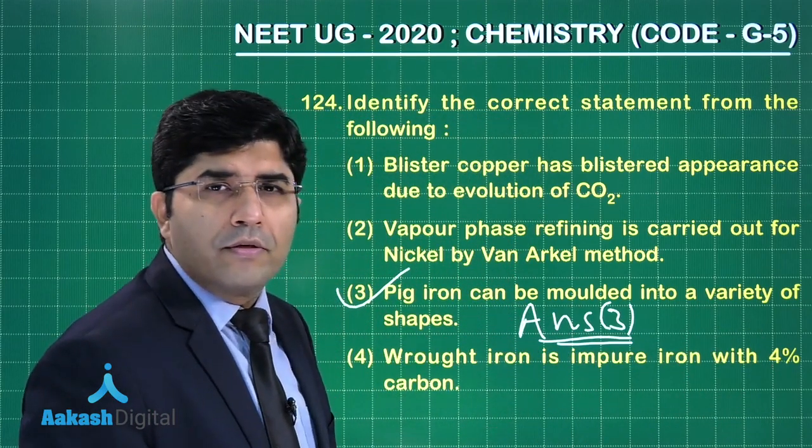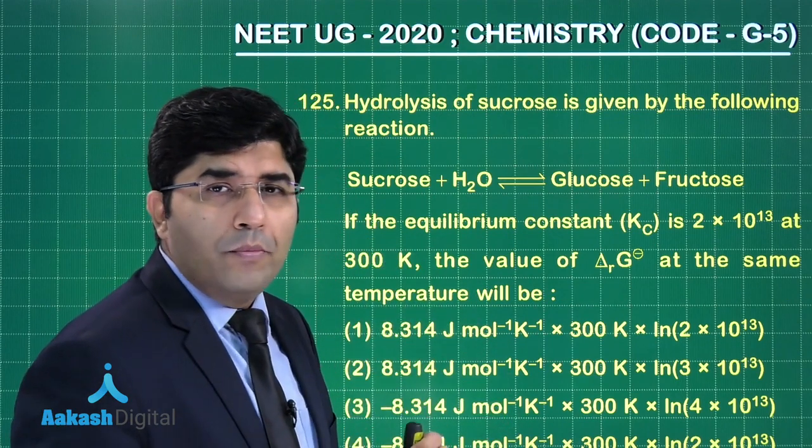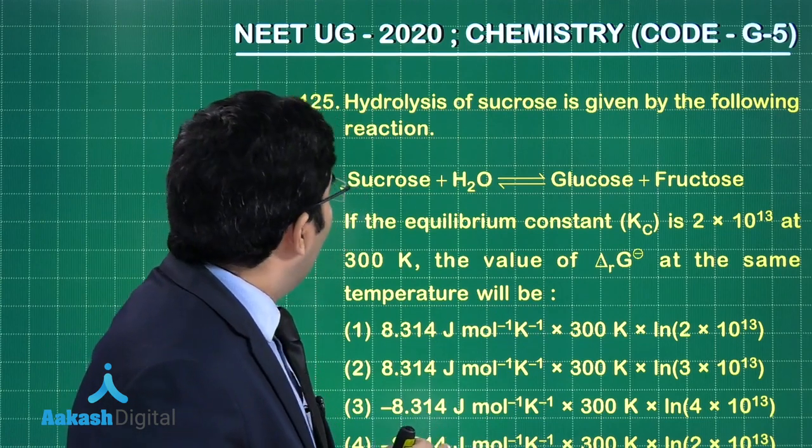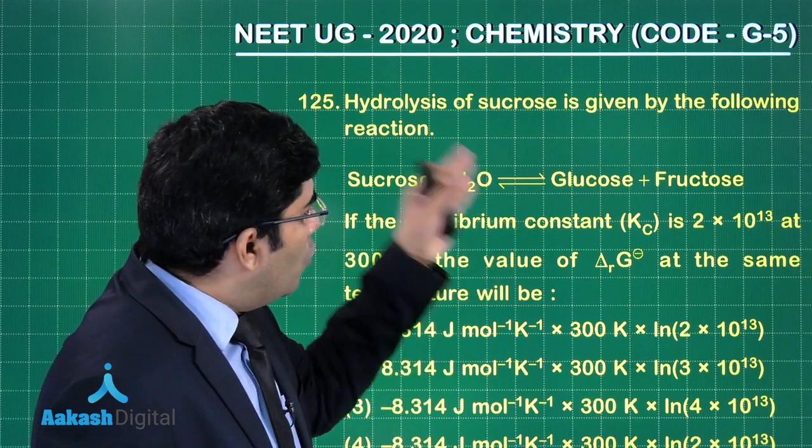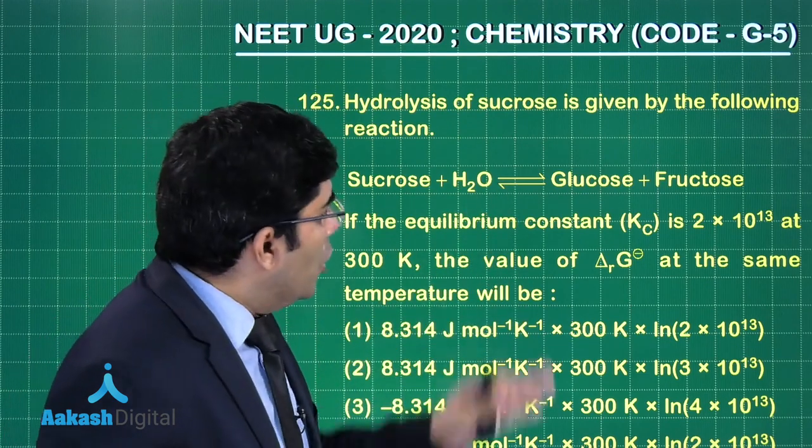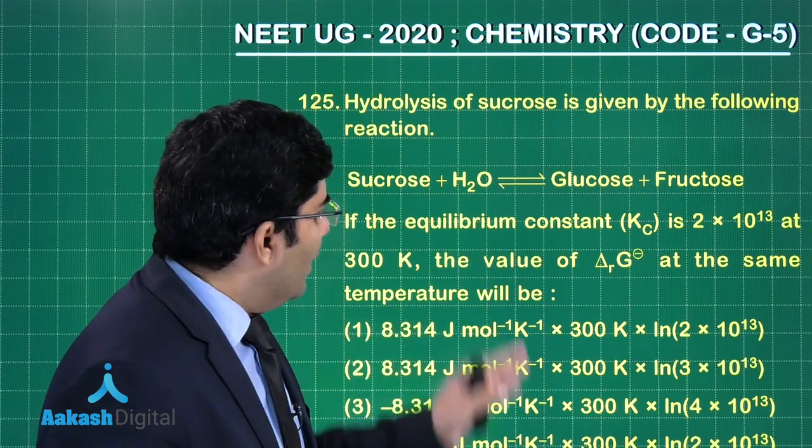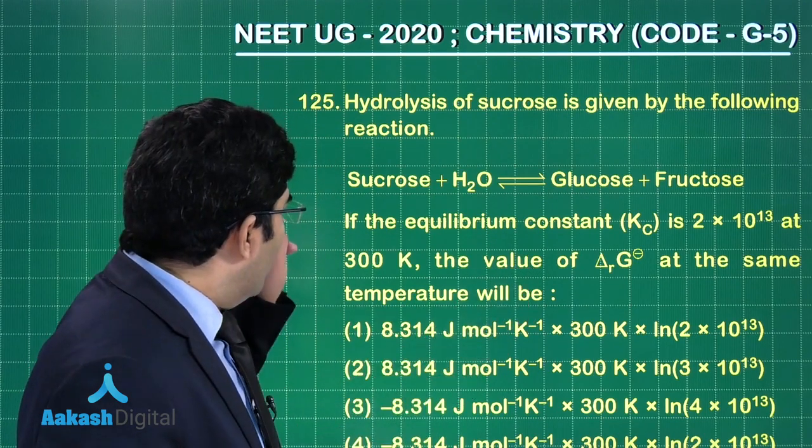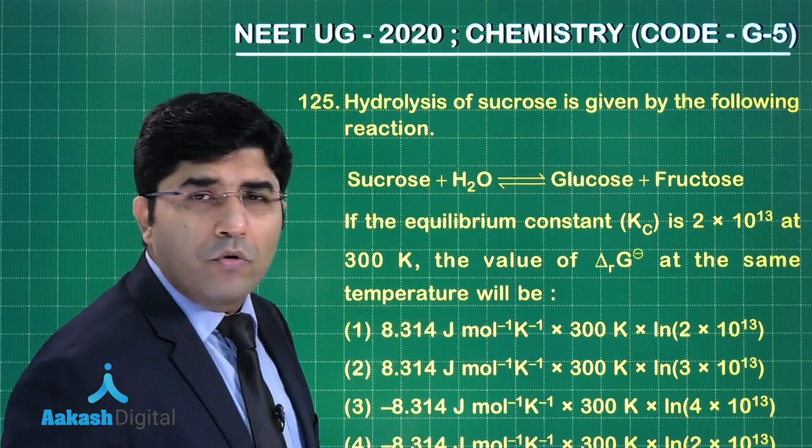Now this is a question from the chapter equilibrium. It's given hydrolysis of sucrose by the following reaction: sucrose is hydrolyzing giving us glucose and fructose. The equilibrium constant is given as 2 into 10 to the power 13, and we have to find out delta G naught of this particular reaction at 300 Kelvin. Four options are given to us.